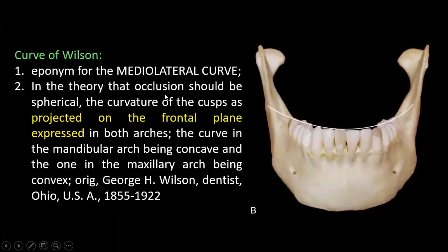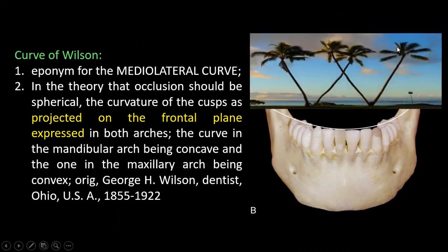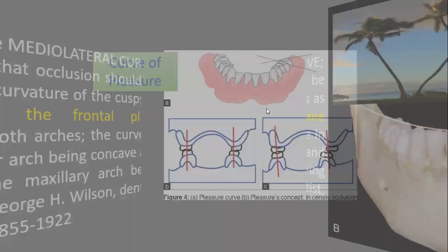The mediolateral curve is the curve of Wilson. It starts from the buccal cusp of the molar and ends at the buccal cusp of the opposite molar, making a concave-upward type of curve. If you are confused between convex and concave in Wilson's curve, remember the letter W — W for Wilson. The W shape has a concave surface upward and a convex surface downward. So Wilson's curve has a concave surface upward and convex surface downward.